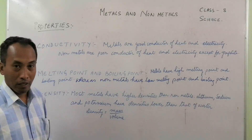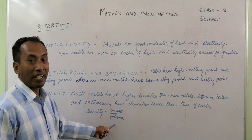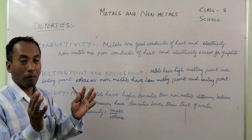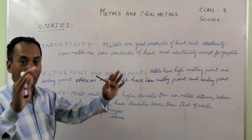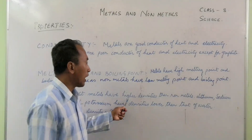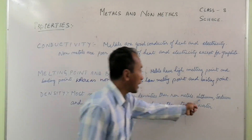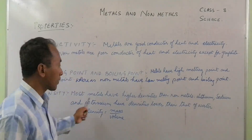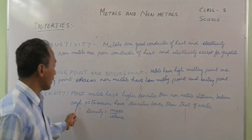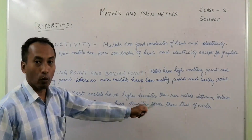Density. The meaning of density is mass per unit volume — mass of a substance in a unit volume is called density. Most of the metals have higher densities than non-metals. But lithium, sodium, and potassium have lower densities than water.